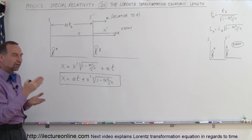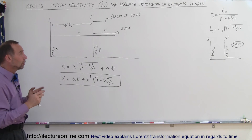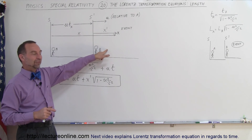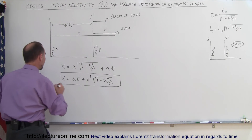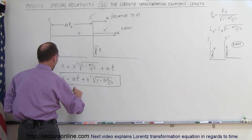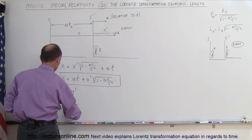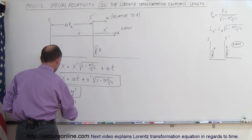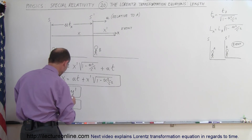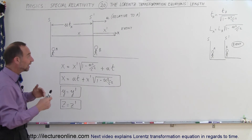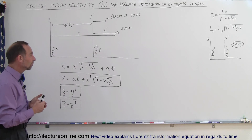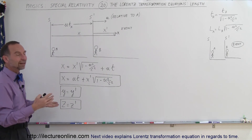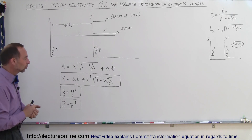What about the transformations for the Y and Z directions? Since there is no movement in the Y or Z direction by the moving reference frame, we simply say Y equals Y' and Z equals Z'. There is no difference in those two directions — no change in apparent size and no relativistic effect, because there is no velocity component in those directions.